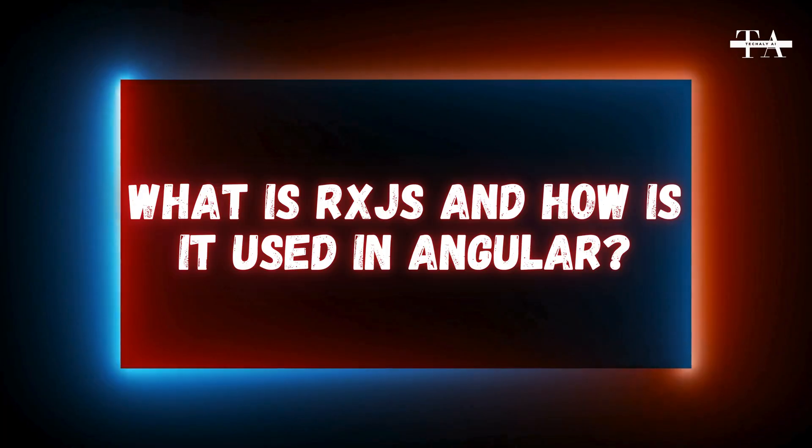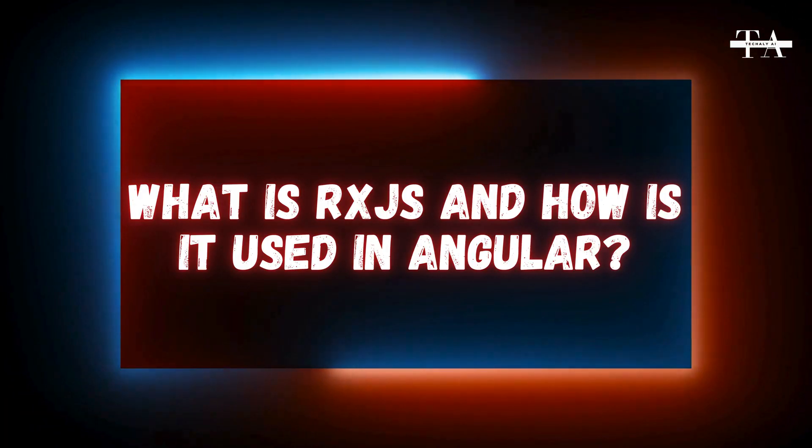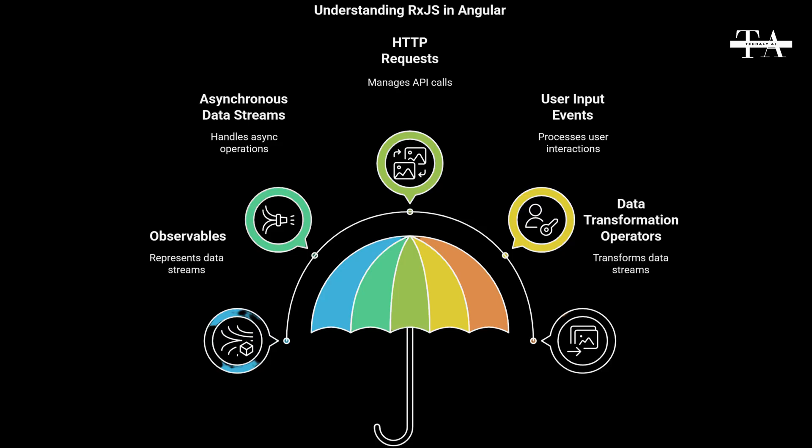What is RxJS and how is it used in Angular? RxJS, reactive extensions for JavaScript, is a library for reactive programming using observables. In Angular, RxJS is used for handling asynchronous data streams, such as HTTP requests and user input events. It provides powerful operators for transforming and managing data streams.